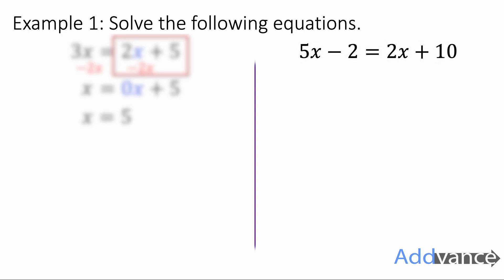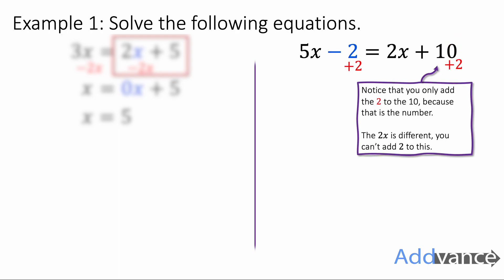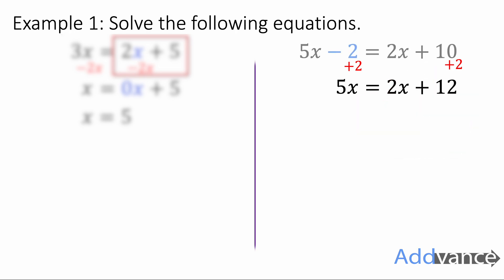Looking at the next example, we've got 5x minus 2 equals 2x plus 10. The opposite of minus 2 is plus 2, so we get rid of the minus 2 by adding 2 to both sides. We only add the 2 to the 10 on the right hand side because the 2x cannot be added by 2. We get 5x equals 2x plus 12.